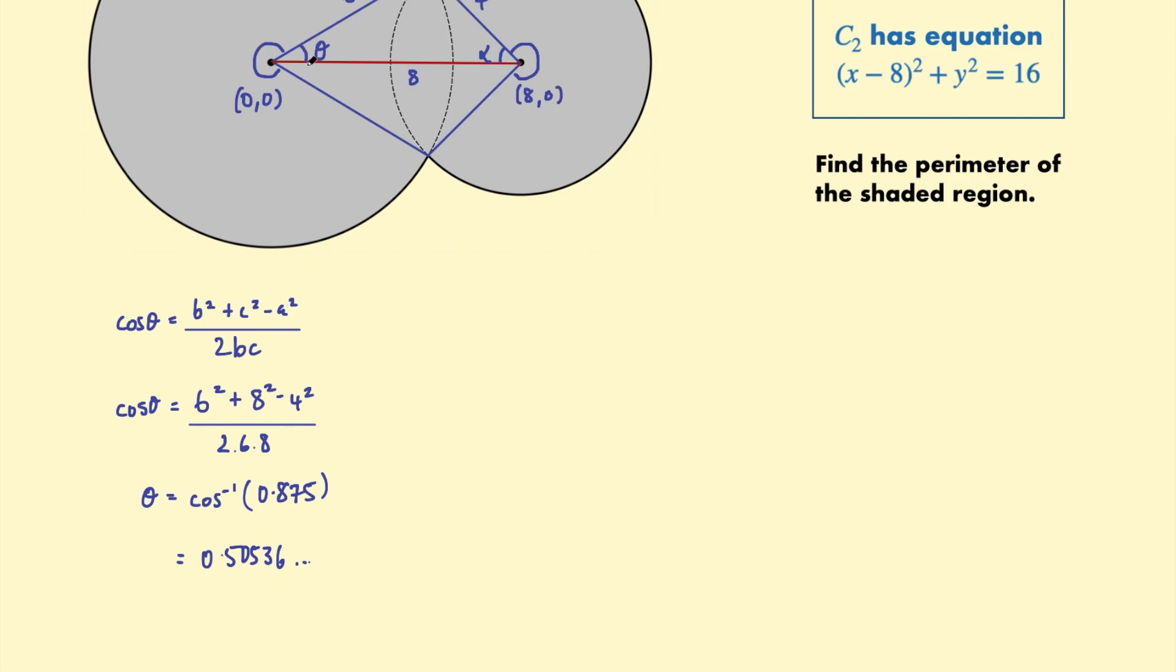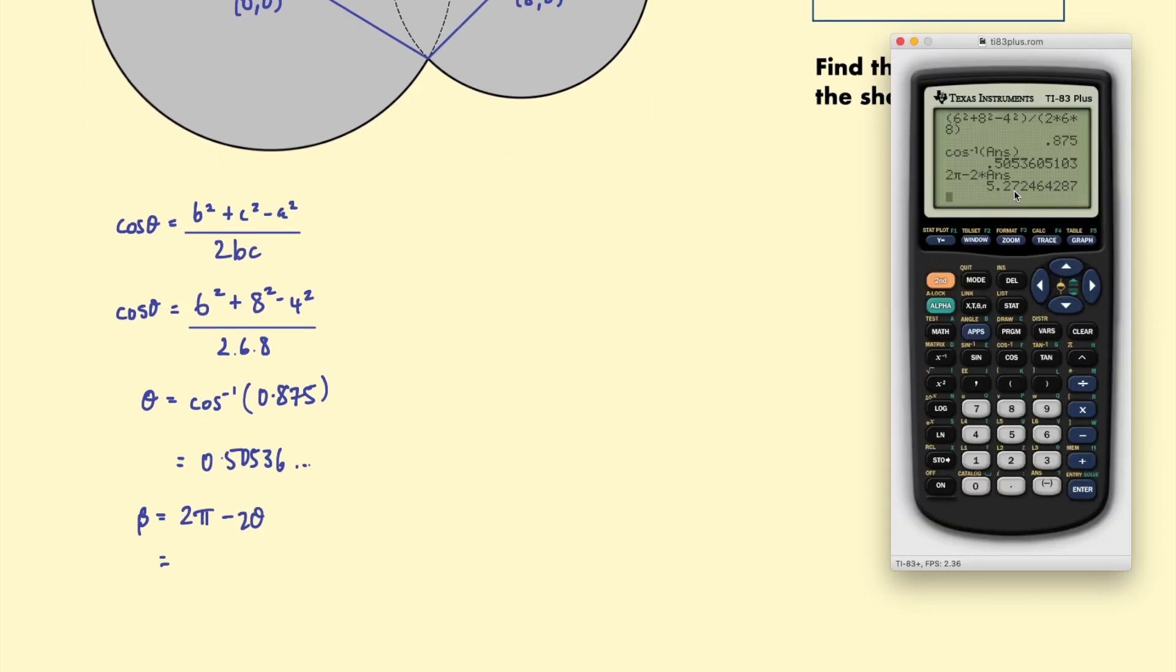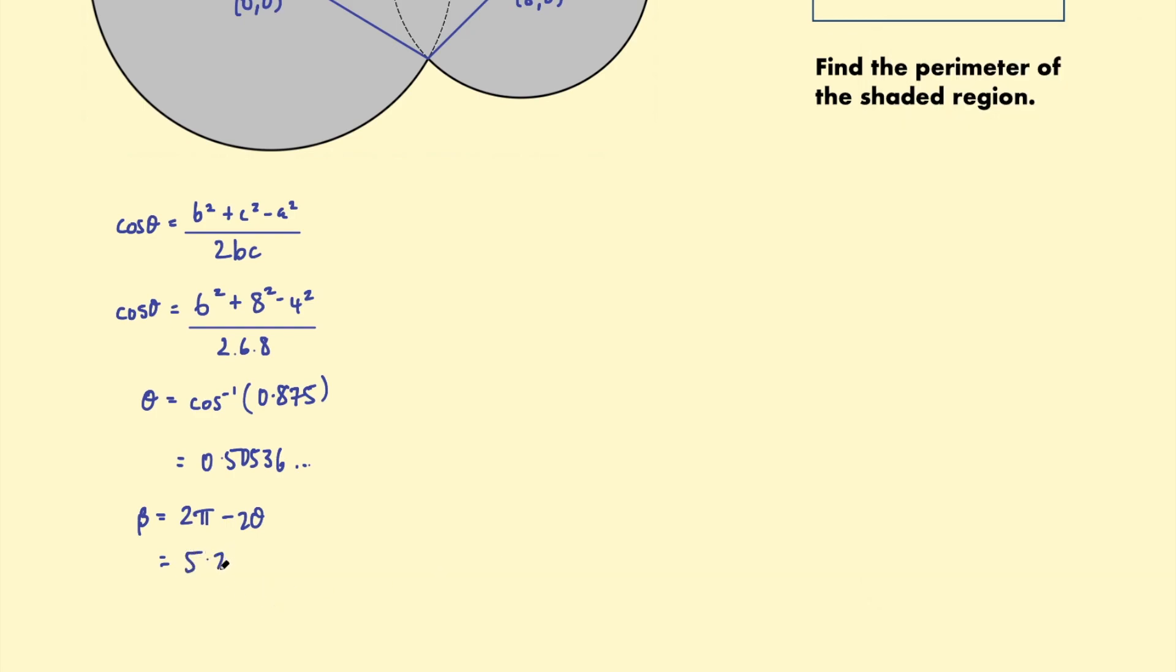Now I want that entire angle. These two parts are going to be the same because these two triangles are congruent. Okay so that entire angle is going to be 2 theta. Now to find this larger angle of this major arc let's call that beta. Beta is going to be the angles in a circle. By the way I'm using radians here not degrees. So the number of radians in a circle or around a point is 2π. So beta is going to be 2π - 2 lots of theta. So 2π - 2θ meaning that entire angle there. Okay and then we can work out beta. So let's go ahead and plug that in. I get 5.272 and so on.